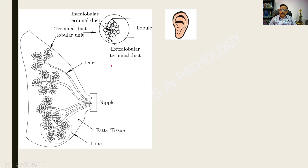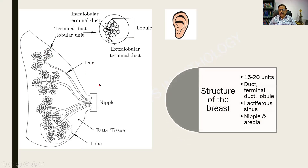Please remember these two things — ductal and lobular origins of malignancy. To summarize: there will be about 15 to 20 units comprising the duct, terminal duct, and lobule, the lactiferous sinus, the nipple, and the areola.